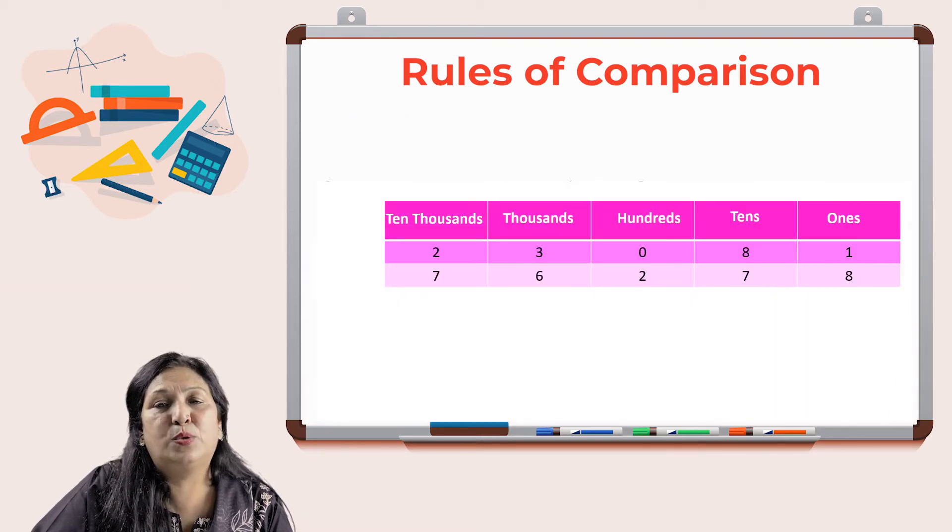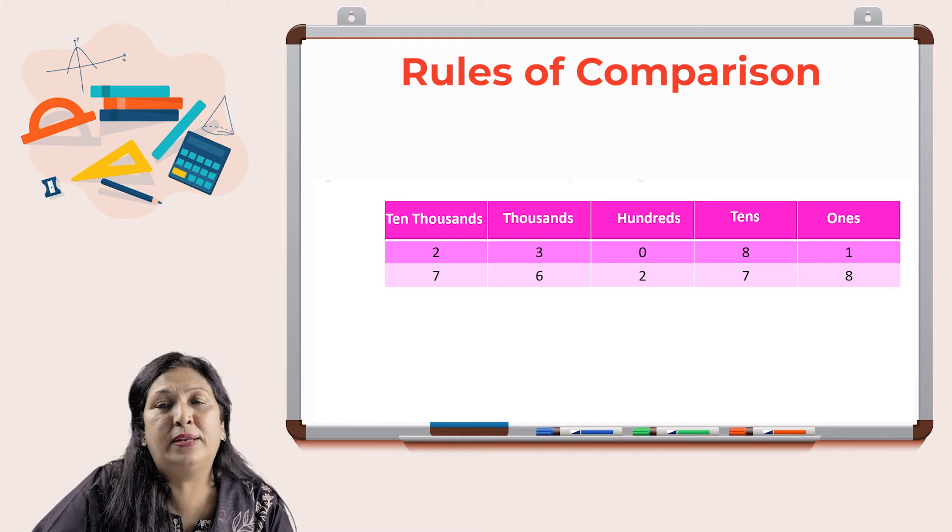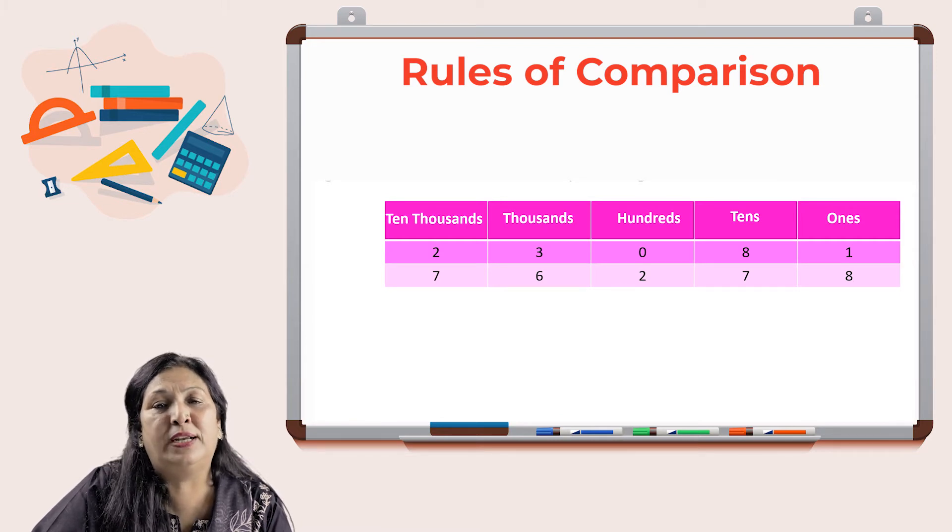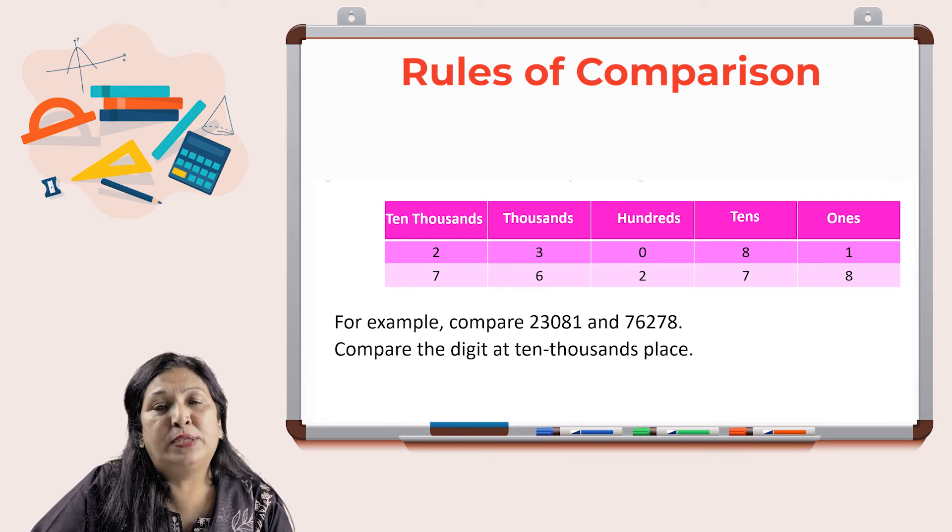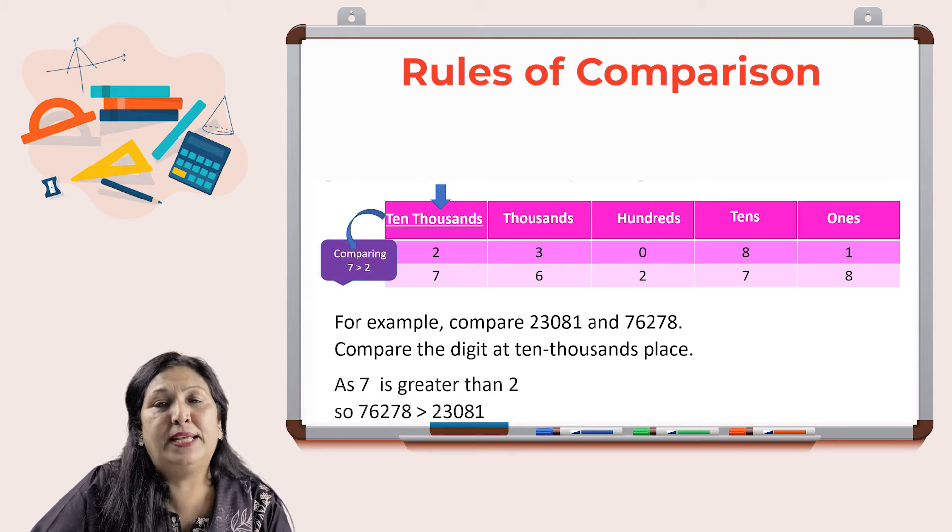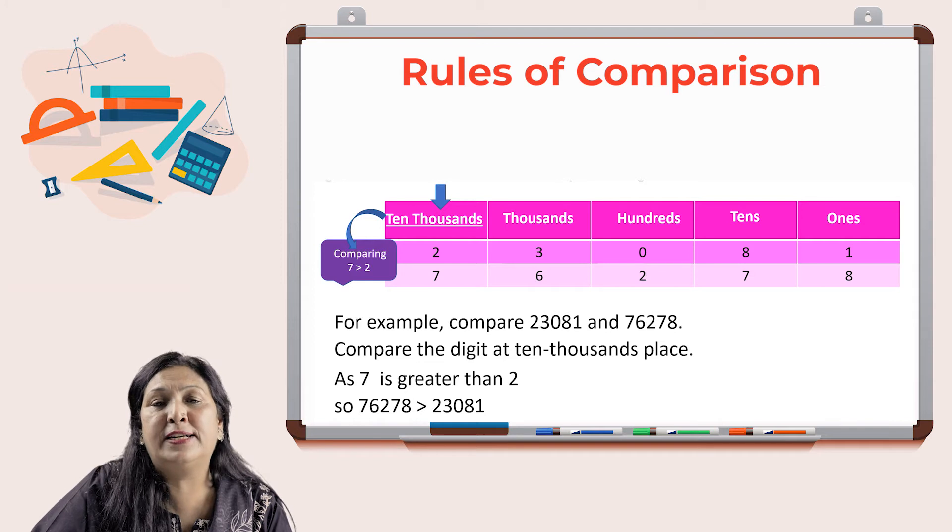Let's compare 23,081 and 76,278. Now look at ten thousands digit. As seven is greater than two, it means 76,278 is greater than 23,081.